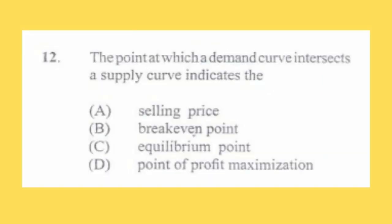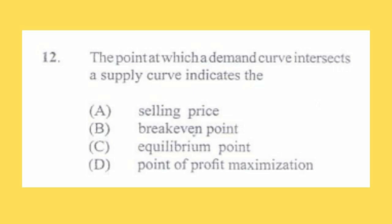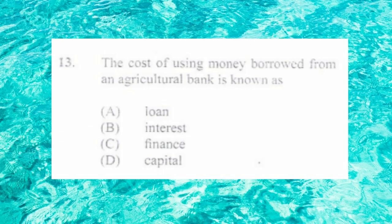Question number twelve: the point at which a demand curve intersects a supply curve indicates the a) selling price, b) break-even point, c) equilibrium point, d) point of profit maximization. The answer is c) equilibrium point. The equilibrium point shows there is no under-supply or over-supply of goods, and both buyer and seller are happy with the price.